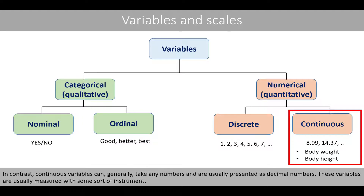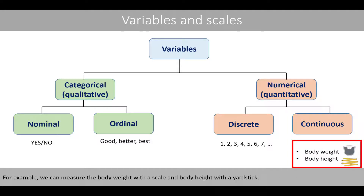In contrast, continuous variables can generally take any numbers and are usually presented as decimal numbers. These variables are usually measured with some sort of instrument. For example, we can measure body weight with a scale and body height with a yardstick.